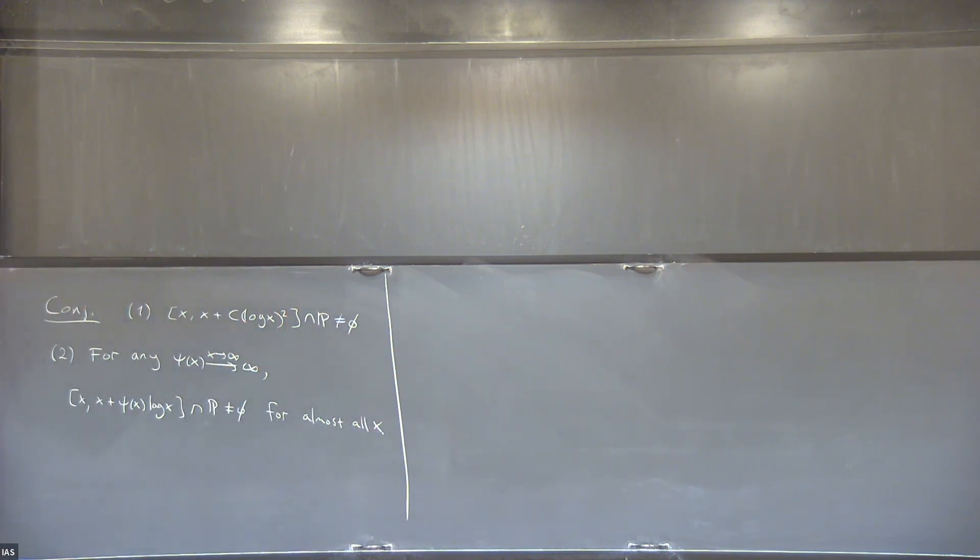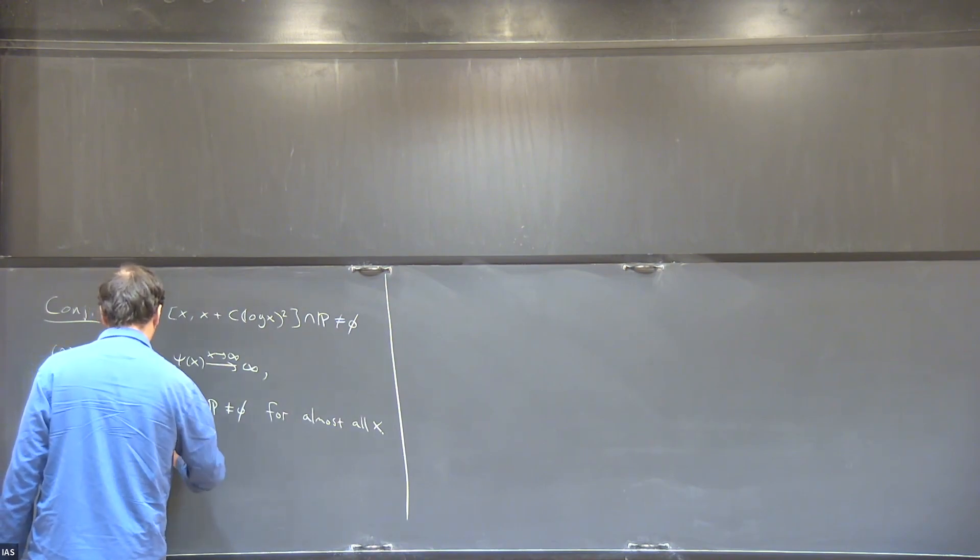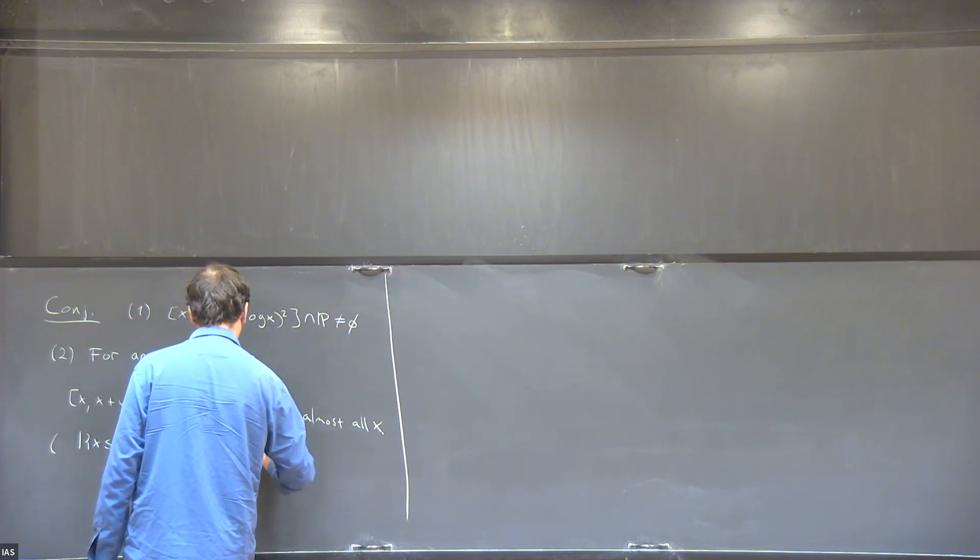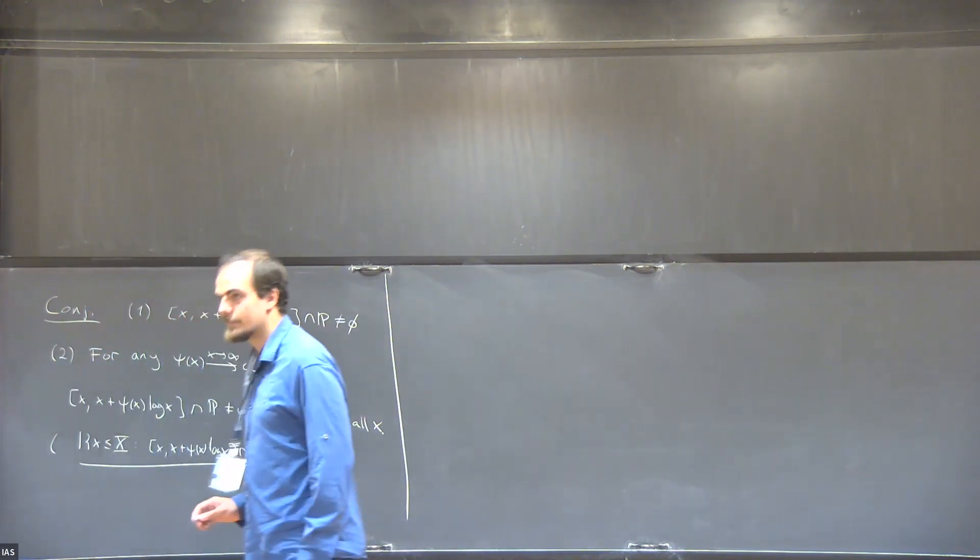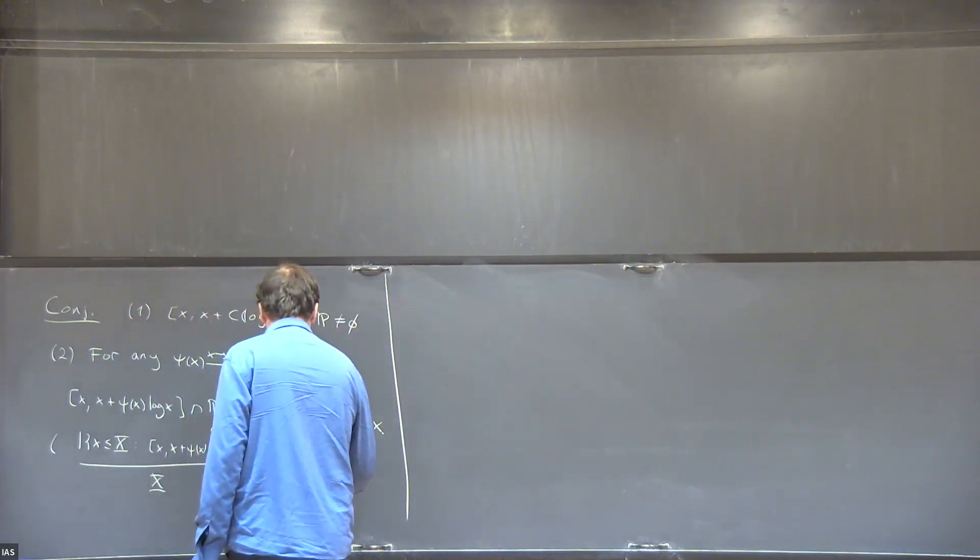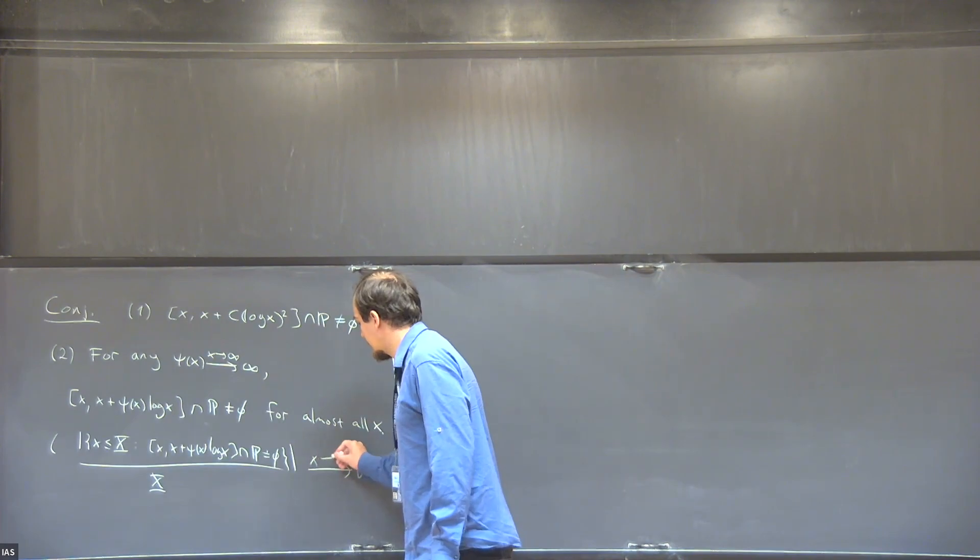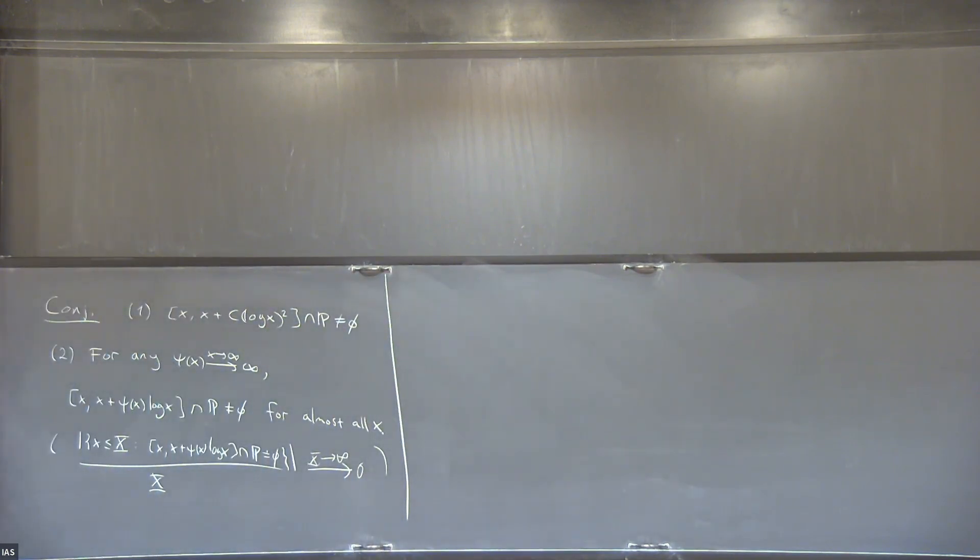Let me spell out what I mean by almost all X. I mean that the asymptotic density of X which don't have this property tends to zero as you go to infinity. So, the proportion of intervals which don't contain primes tends to zero as X goes to infinity. That's what I mean by almost all, and that's the notion that we use a lot in this talk.